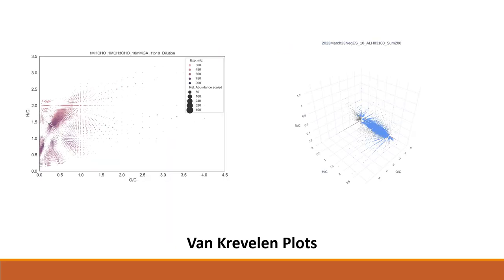We also made van Krevelen plots, which help us visualize the distribution of organic elements in our samples by comparing the sample's ratio of hydrogen to carbon with its ratio of oxygen to carbon. The resulting clusters and data points can be used to identify organic compounds. This can even be extended to the third dimension, as shown in the image on the right, when the ratio of nitrogen to carbon is also included.